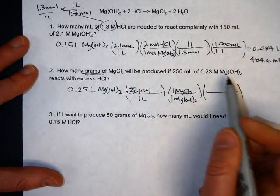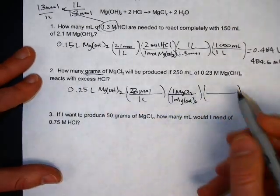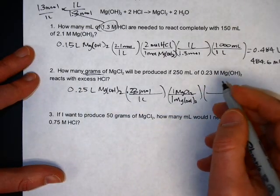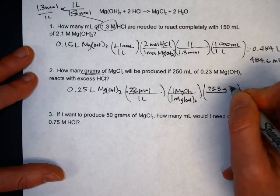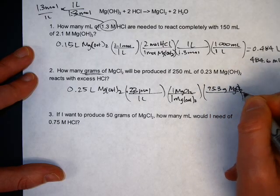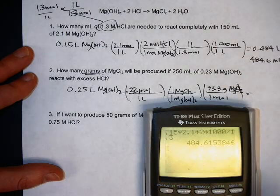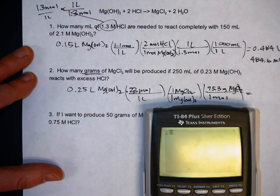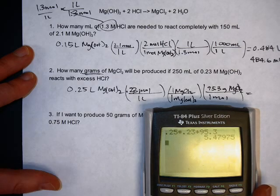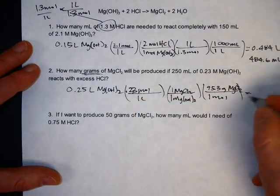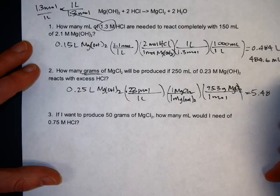Finally, you want your answer in grams, so that's when like a traditional stoichiometry problem would end. Have the molar mass of the thing that you want on top here. That's magnesium chloride, and that molar mass is 95.3 grams. And that ends up being 5.48 grams of MgCl2.